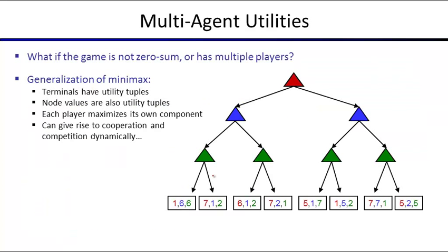There are other types of games. So far, we've always assumed one number at the bottom of the tree. The implicit assumption was that if the maximizer gets plus five, the minimizer gets minus five — they're opposites so you only need one number. In general, when there are multiple players, utilities don't need to sum to zero. With three players, you need to show all utilities. For instance, one outcome might have utility one for red, six for blue, and six for green.